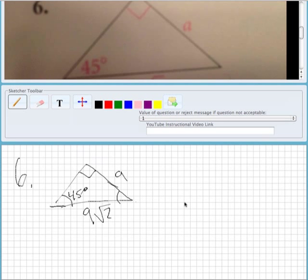So we're trying to find A, which is the leg of a right triangle. And this is actually a special right triangle. This is a 45, 45, 90 triangle.